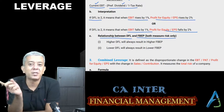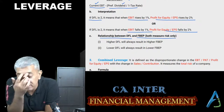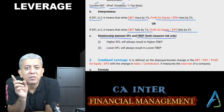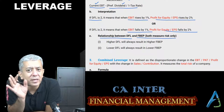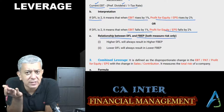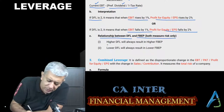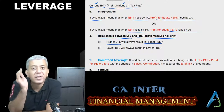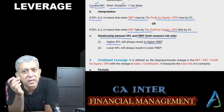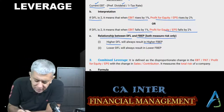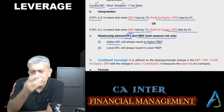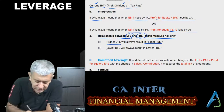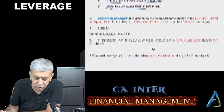Financial break-even point (FBP) is that level of EBIT at which the company earns zero EPS — and it also arises due to fixed costs. So if your degree of financial leverage is higher, your financial break-even point will also be higher. Both measure risk — it's just that leverage is a ratio, whereas FBP is an absolute amount.